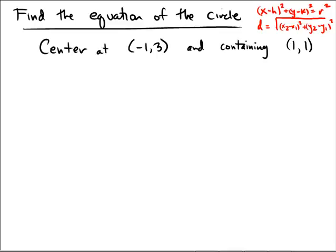So in this problem we're told the center, which is of course the h and the k that comes from the formula for the equation of a circle. And then we're told a point that is on the circle. So we're going to calculate the distance between the center and the point that's on the circle by doing a distance formula.